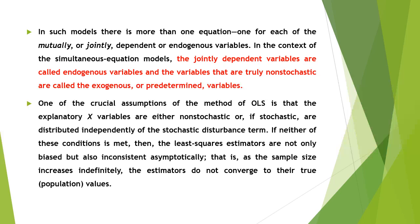In simultaneous equation models, it is not advisable to estimate parameters of a single equation without considering information provided by other equations in the system. One crucial assumption of OLS is that explanatory variables are either non-stochastic, or if stochastic, distributed independently of the disturbance term — that is, uncorrelated with the error term. If neither condition is met, the least squares estimators are not only biased but also inconsistent asymptotically: as sample size increases indefinitely, the estimators do not converge to their true population values.